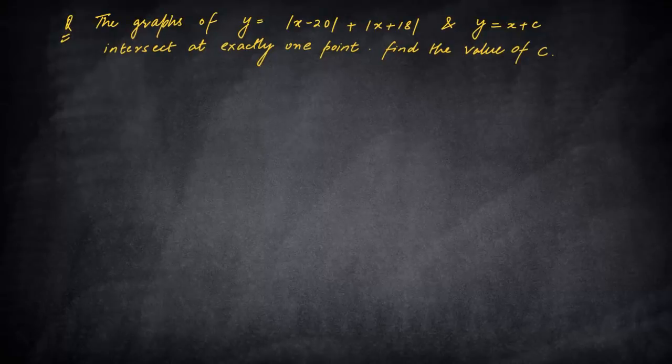Let us discuss this particular problem which we posted today in the morning. The graph of y = |x-20| + |x+18| and y = x+c intersect at exactly one point. Find the value of c which will satisfy this condition.